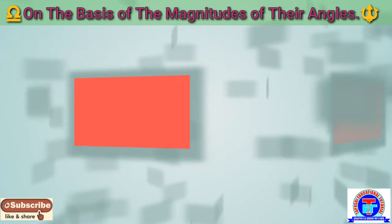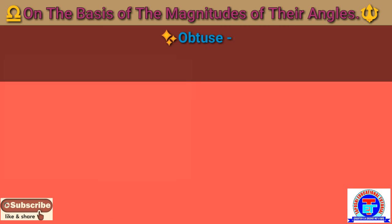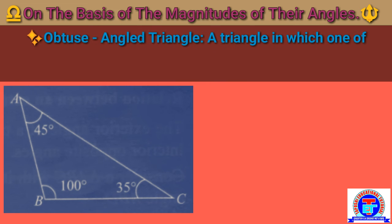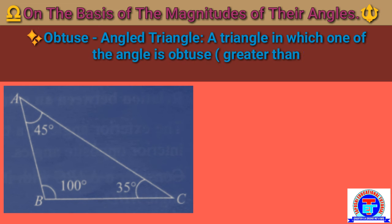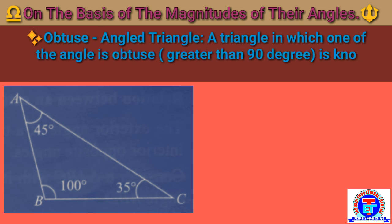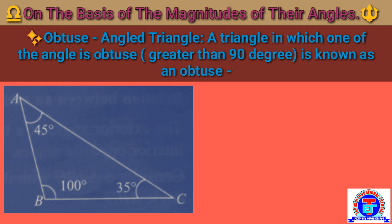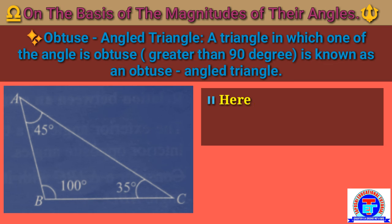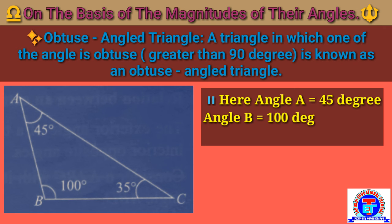An obtuse angle triangle is a triangle in which one of the angles is obtuse, meaning greater than 90 degrees. In this adjoining figure, ABC is an obtuse triangle where angle A = 45°, angle B = 100°, and angle C = 35°.